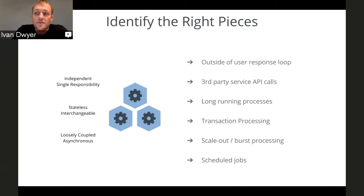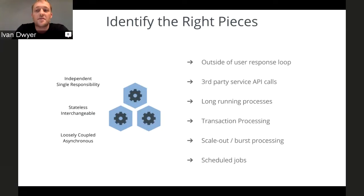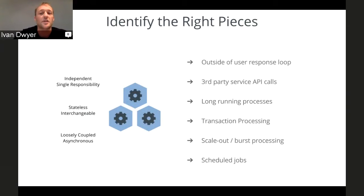From a functionality perspective, it's the processes that fall outside of the user response — that could be calls to third-party services, things that are very long-running like encoding, any kind of transaction such as a billing process, or anything that needs to scale out massively — like doing something a million times randomly. And then of course anything that's scheduled. If you look at cron jobs, those are basically just tasks that happen asynchronously. When we talk to our customers, we review their applications and identify the right pieces that make sense in this task-centric model over an app-centric model.